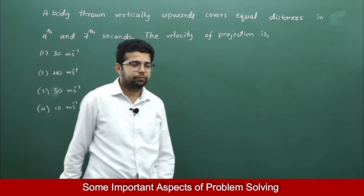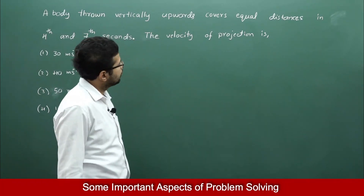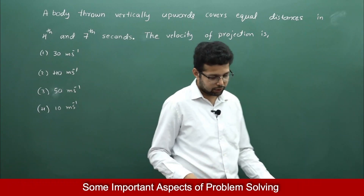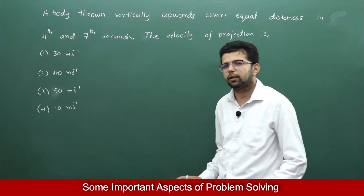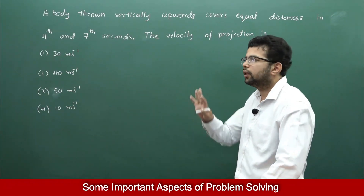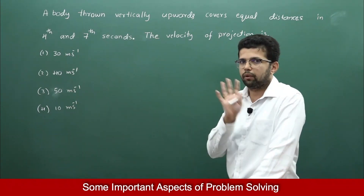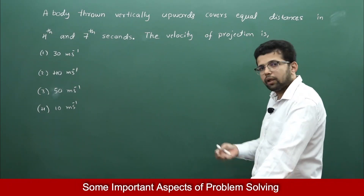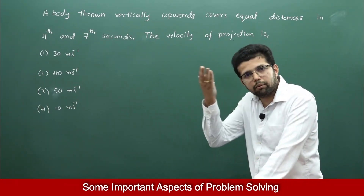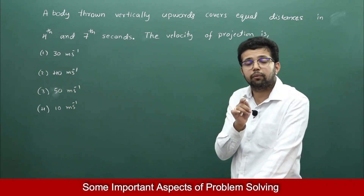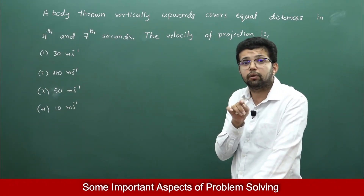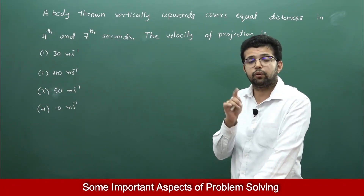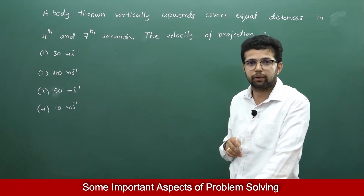Now, for any student who is a little serious about entrance examinations and who has studied the synopsis or the formula in the motion in a straight line chapter, he will definitely remember the Sn formula. Sn is the distance travelled in the nth second: Sn = u + (a/2)(2n − 1).